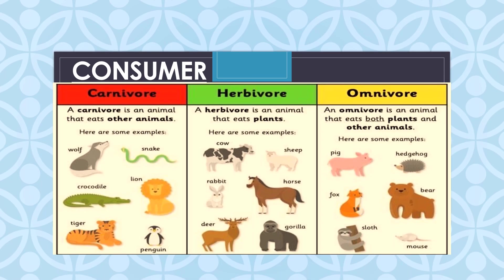Next are consumers. Living organisms that cannot make their own food but consume either plants or other animals are called consumers or heterotrophs. Consumers depend on autotrophs for their food. All animals are consumers, and they are further divided into three categories: herbivores, carnivores and omnivores. Herbivores are animals that eat green plants and are called primary consumers — for example, deer, horse and elephant. Carnivores are animals that eat other animals and are called secondary consumers — for example, tiger, lion and leopard.